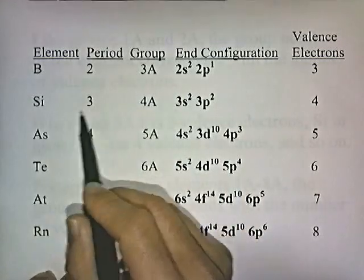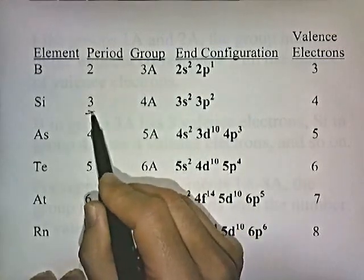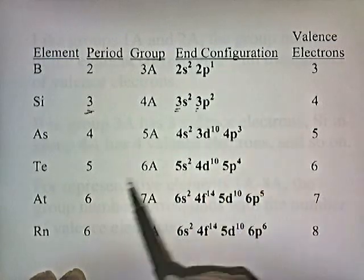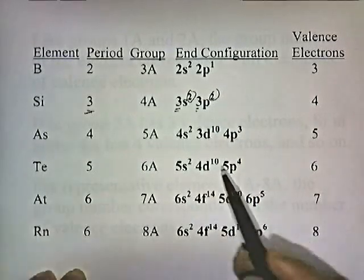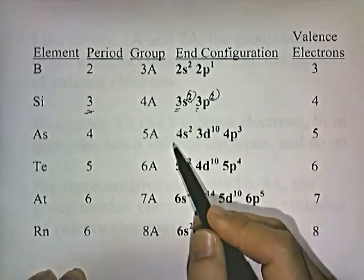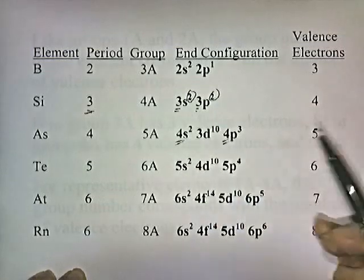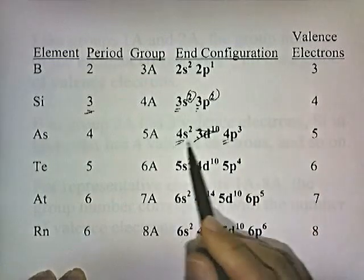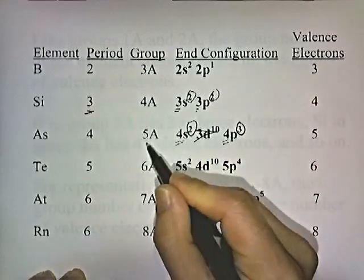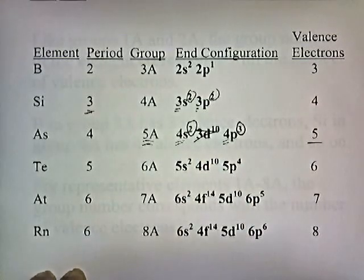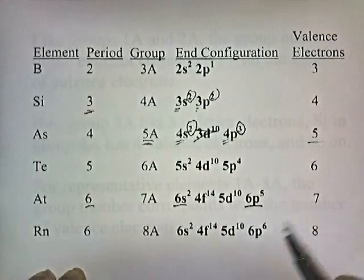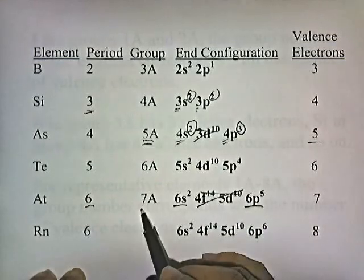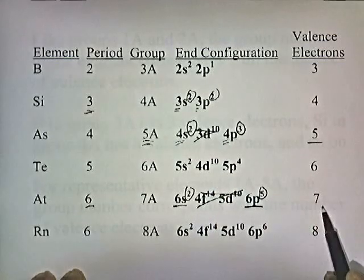Silicon is in period 3 and group 4; the outer electrons are in the third energy level, and 2 plus 2 gives 4 valence electrons. Arsenic is in period 4; its valence electrons are in the fourth energy level. We ignore lower levels and get 2 plus 3 equals 5 — it's in group 5A with 5 valence electrons. Astatine is in period 6; the highest energy level is the sixth. It's in group 7, and 2 plus 5 equals 7, so it has 7 valence electrons.